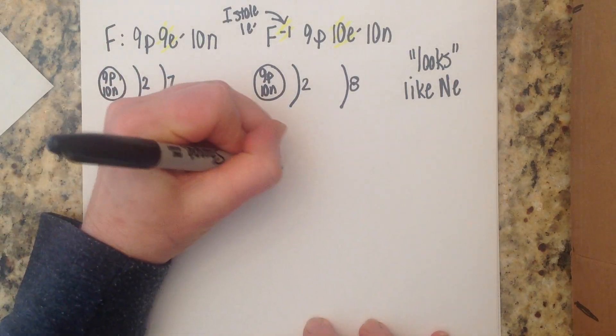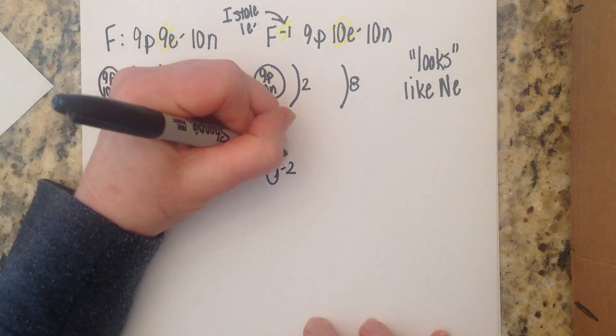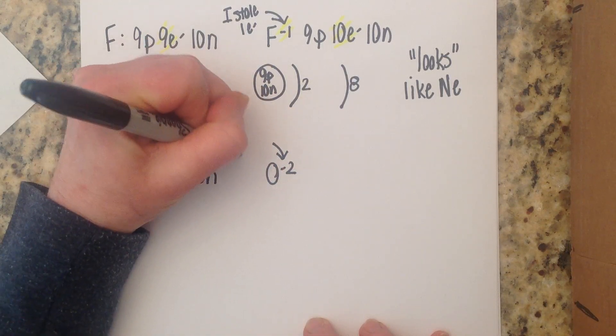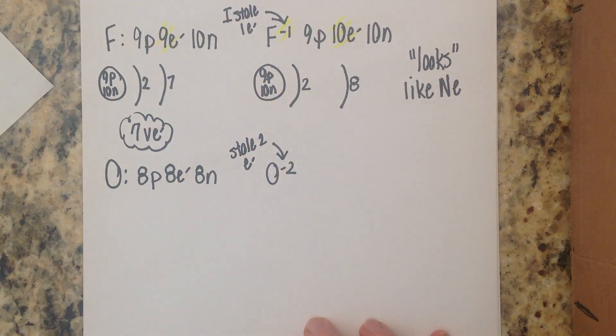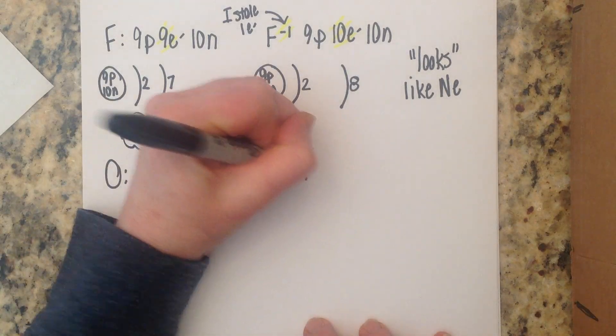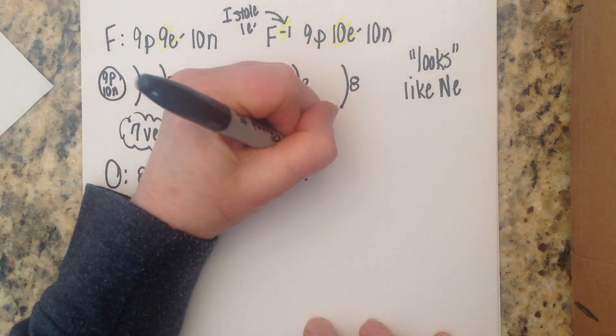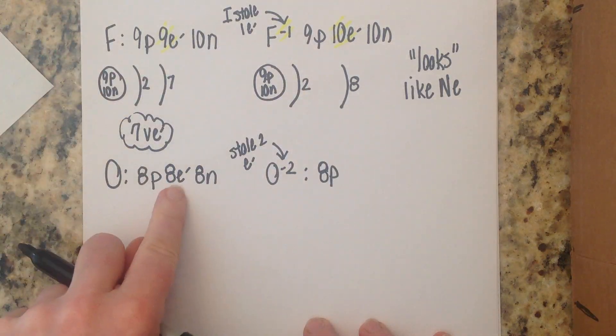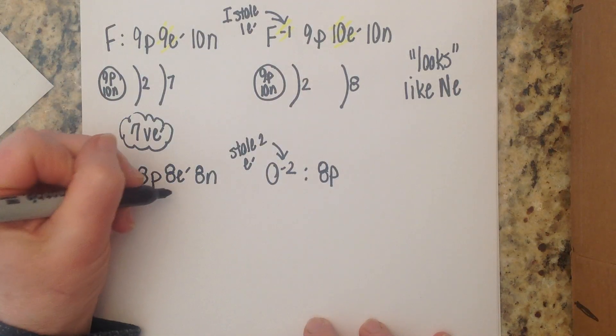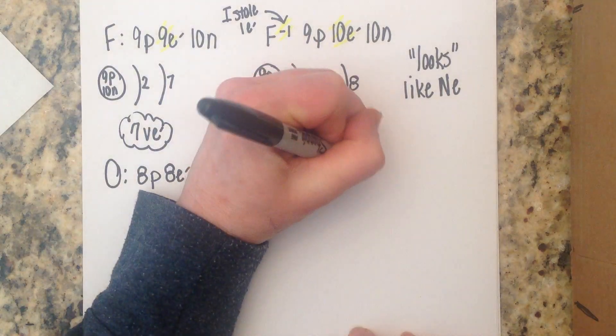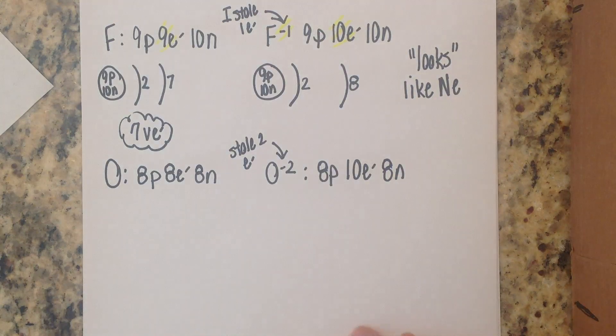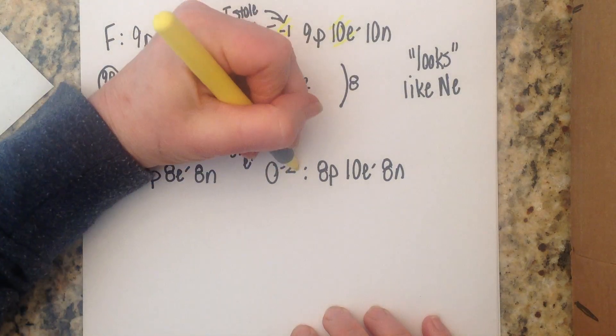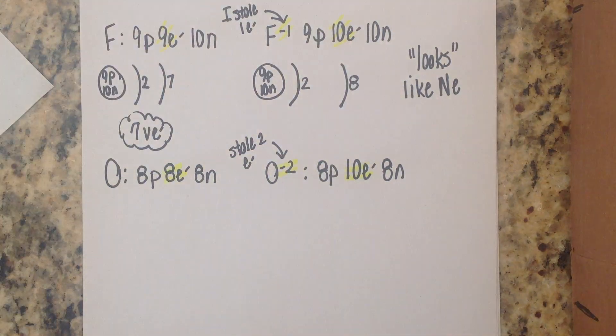When oxygen becomes an anion that negative two is telling you he just stole two electrons. We now have a negative two charge so the oxygen anion is going to have eight protons eight plus two is going to be 10 electrons and the number of neutrons is eight it does not change. So once again the only thing that has changed is the number of electrons.